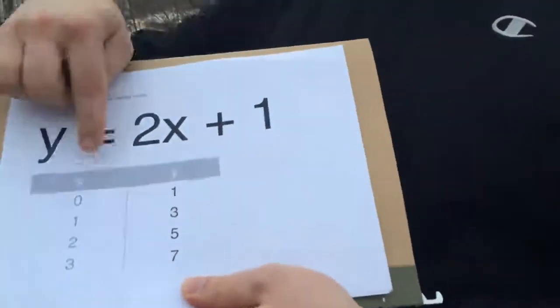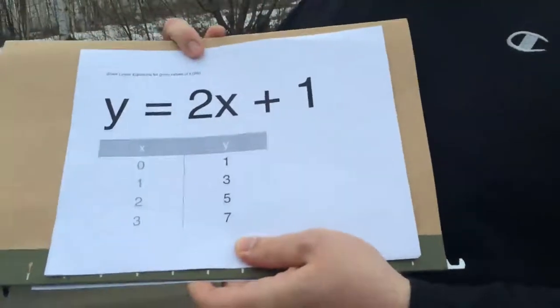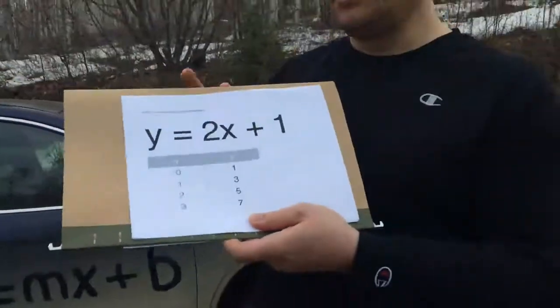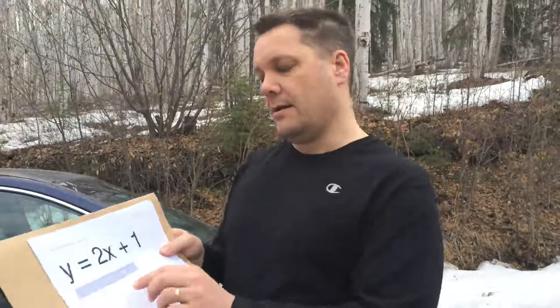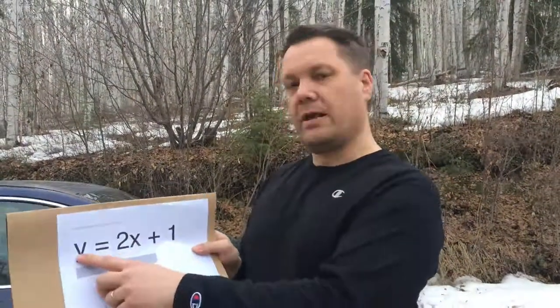1, 3, 5, 7. Those pairs of numbers represent points on the Cartesian plane. And in turn, every single x you plug in there will give you another y, and essentially give you another point.